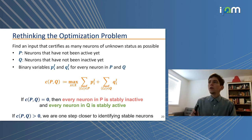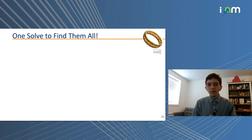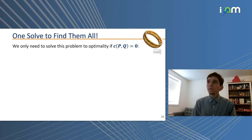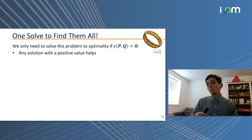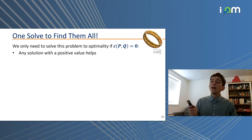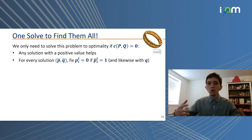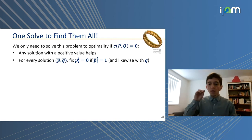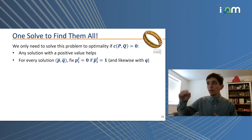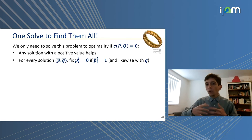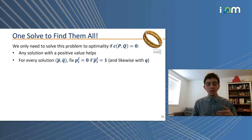We don't need to solve this problem to optimality more than once — we only need an optimal solution of zero to prove stability. Any positive feasible solution along the way reveals an input activating or inactivating neurons in new states, shrinking sets P and Q. In a MIP solver, we implement a lazy constraint callback: for every feasible solution found, we inspect variables p and q, identify neurons with new states, and add valid cuts setting those variables to zero. We continue until the optimal value for remaining neurons is zero.